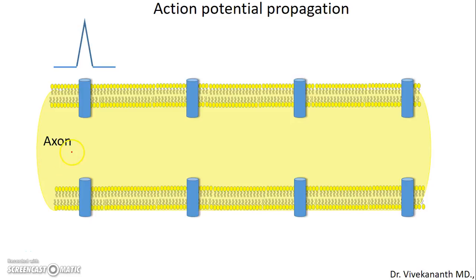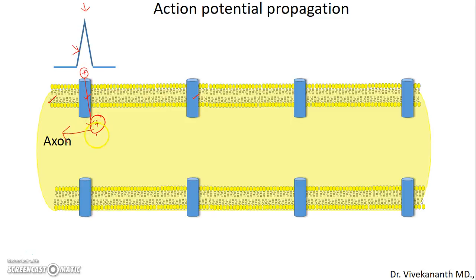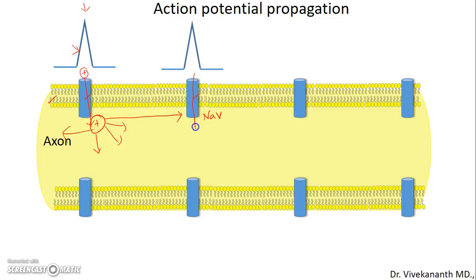This is a cross-section of an axon showing the membrane and the ion channels present in it. This is the action potential recorded at this particular site. During the depolarization phase of the action potential, positive ions enter inside the axon, and once the charges are inside, they spread in all directions. Some of them reach the neighboring voltage-gated sodium channels and open them, setting up an action potential at that site.